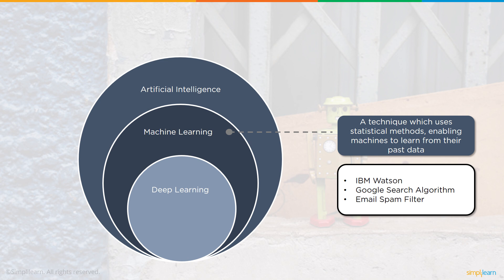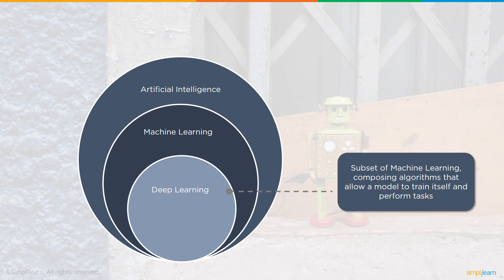Deep learning is a subset of machine learning, composing algorithms that allow a model to train itself and perform tasks. AlphaGo and natural speech recognition are examples.